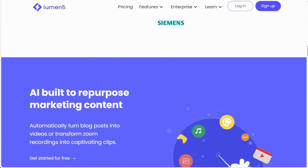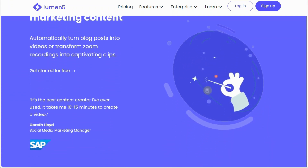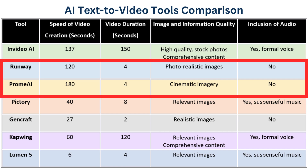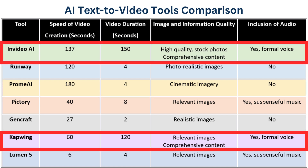Here is a table that highlights the varying performance of the seven AI text-to-video tools. If you are looking for high-quality cinematic images, Runway and Prom AI are your top choices. InVideo and Capwing offer lengthy videos with audio suitable for informative content. So there you have it — seven AI text-to-video tools. I hope you found this video informative and inspiring. Thank you for tuning in, and I will see you in the next video.